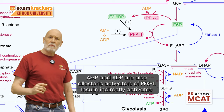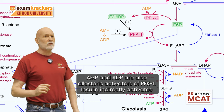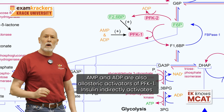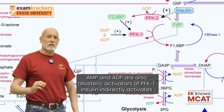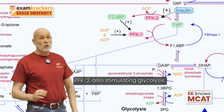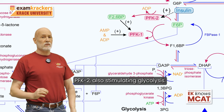AMP and ADP are also allosteric activators of PFK1. Insulin indirectly activates PFK2, also stimulating glycolysis.